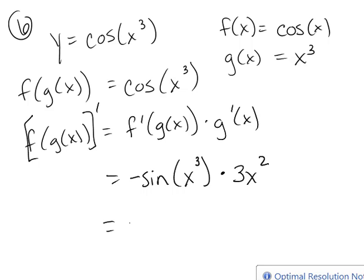So this cleans up as negative 3x squared times the sine of x cubed. We like to put the numbers and letters in front of the sine.